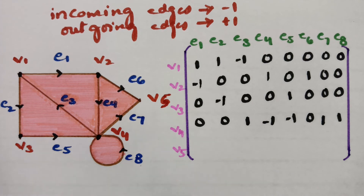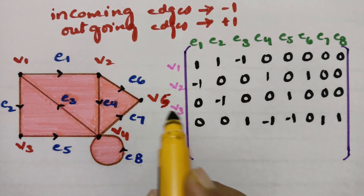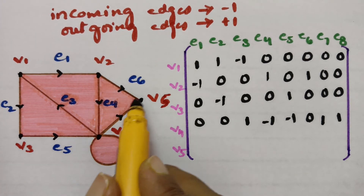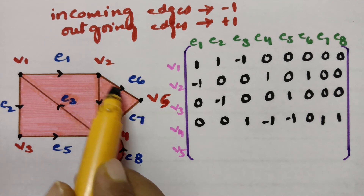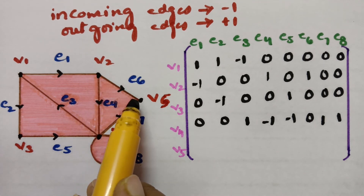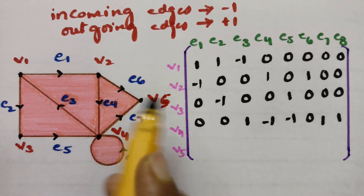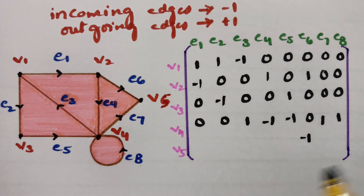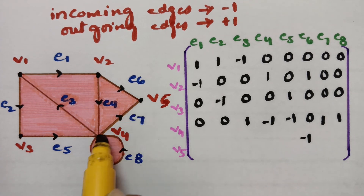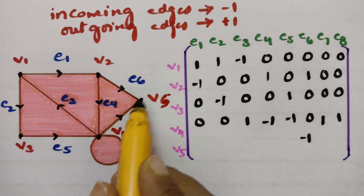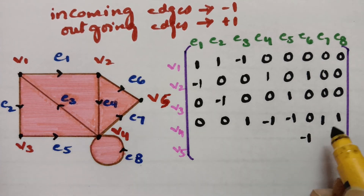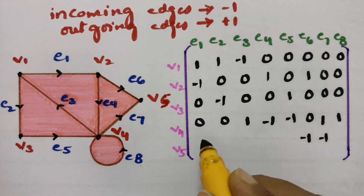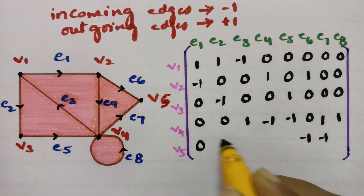Going to v5, it has only two edges. e6 is incoming, so minus 1. e7 is also incoming, so minus 1 for e7 as well. There are no other edges.